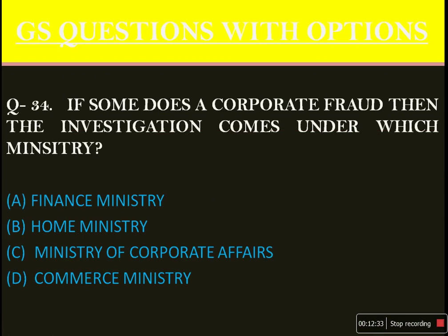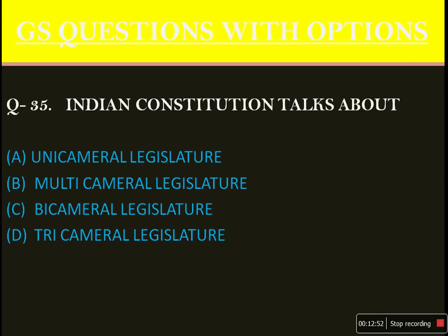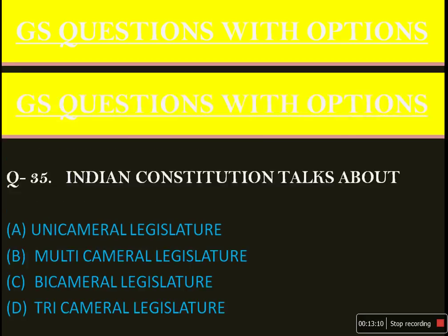If someone commits a corporate fraud, the investigation comes under which ministry? Straightforward question: the answer is option C, Ministry of Corporate Affairs — it's a corporate fraud. Like the Harshad Mehta scam, if you know. The Indian Constitution talks about bicameral legislature. Bi means two — there will be a Council of States (Rajya Sabha) and a lower house (Lok Sabha). So the answer is option C: bicameral legislature.